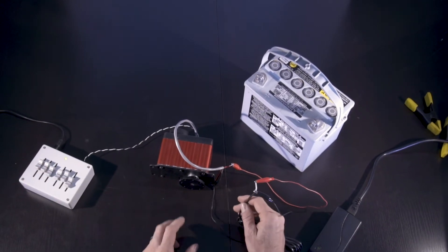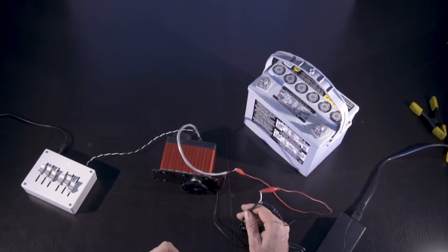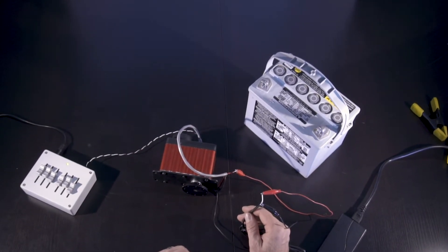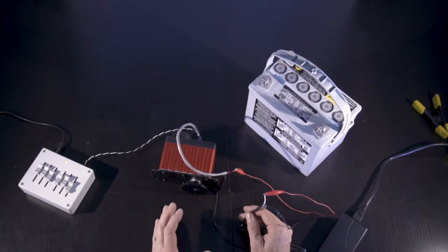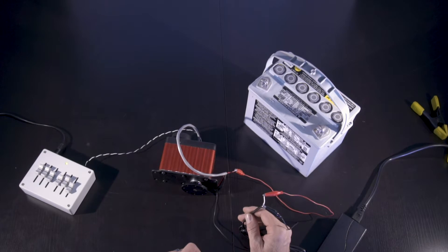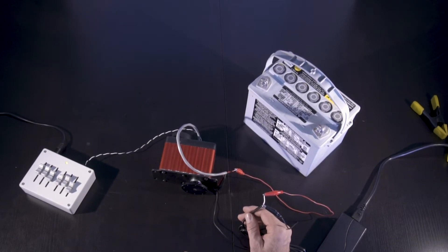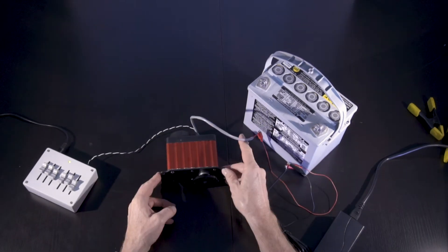And one other note about our servos, they have a lot of gear reduction. We have essentially two different gear reduction levels. There's a thousand to one reduction. There is 500 to one reduction. And that's what gives them the ability to lift extraordinary loads.